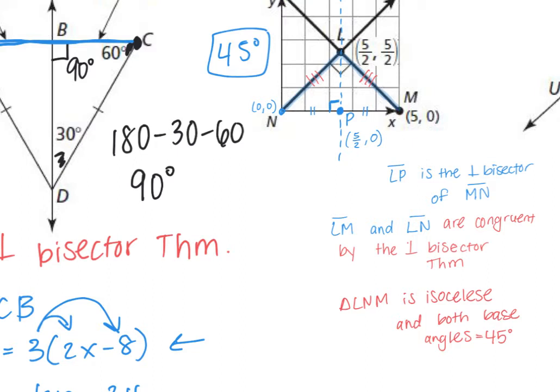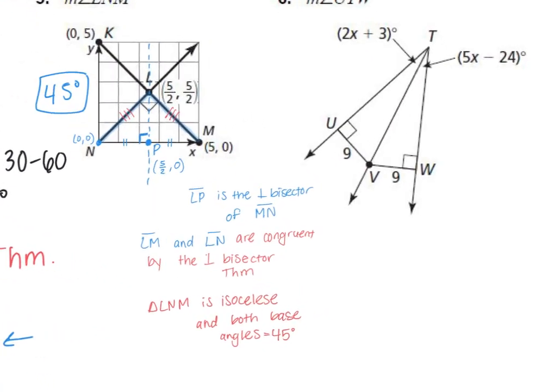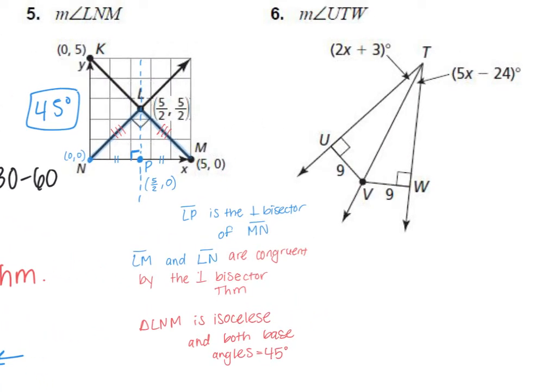Number five was very tricky. If you still don't understand it even after we went over it, don't worry — this was a tough question and I won't ask you a question like this on an assessment. Okay, number six: we want to find the measure of angle UTW — that's this whole angle here.